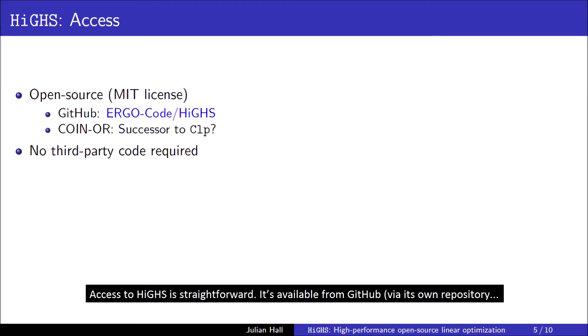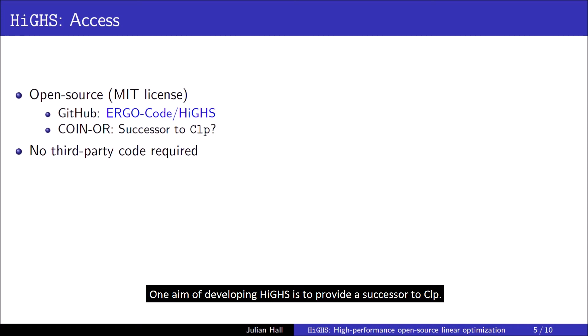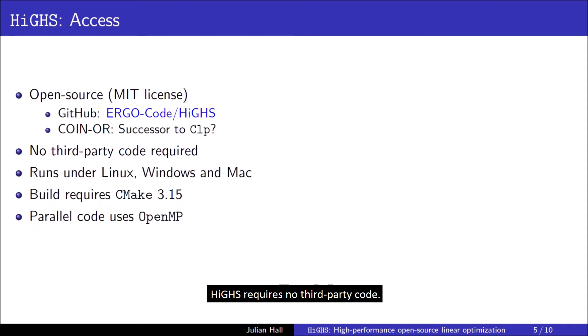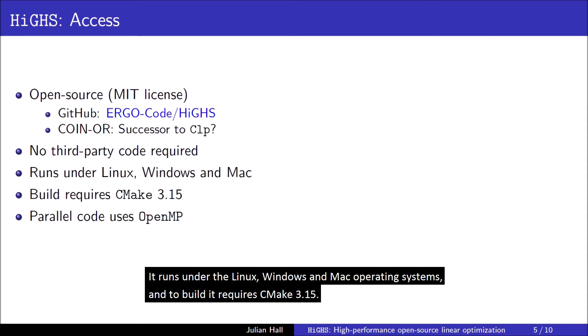Access to HISE is straightforward. It's available from GitHub via its own repository and Coin.or as open source under the very permissive MIT license. One aim of developing HISE is to provide a successor to CLP. HISE requires no third party code. It runs under the Linux, Windows and Mac operating systems, and to build it requires CMake 3.15.